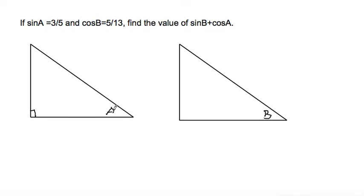So if this is angle A, we know that sine of A is 3 over 5. Sine is opposite over hypotenuse, so we can write this as this side would be 3, this side would be 5.